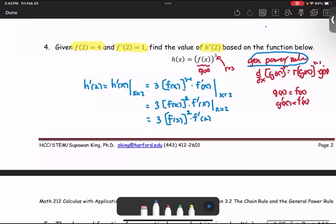And when we look at the given information, f(2) is 4, so in here is 4. f'(2) is 1. Then we get 3 times the number 4 raised to the power 2 and multiply by 1. So 3 times 16 times 1 turns out to be 48 as a result for this problem.